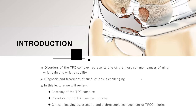Injuries of the TFC complex represent one of the most common causes of ulnar wrist pain and disability. Remember that ulnar wrist pain is the most common clinical scenario of the wrist, and the diagnosis and treatment of such injuries is challenging. In this lecture, we will review the anatomy of the TFC complex, the Palmer classification, and other injuries not included in the Palmer classification, as well as clinical aspects, imaging assessment, and arthroscopic management.